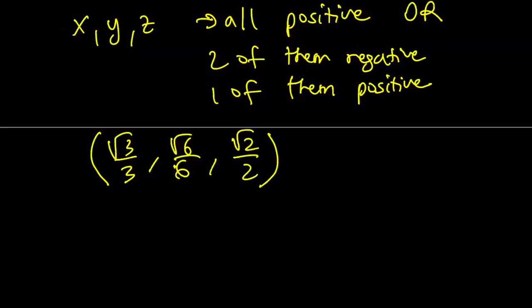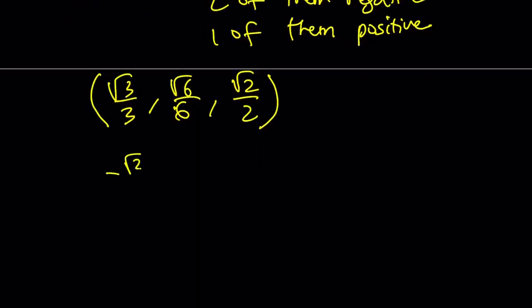As well as another one, like, for example, I can go with negative root three over three, negative root six over six, with positive root two over two. This is also going to work. Obviously, we can write more. And zero, zero, zero is also going to work as a special, well, not so special solution. And this brings us to the end of this video.